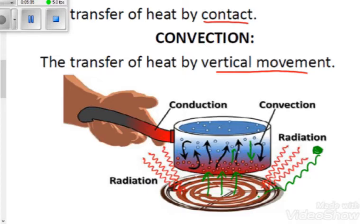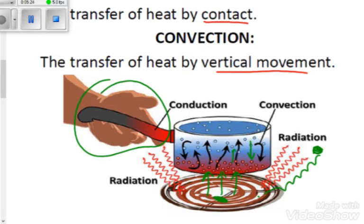The green and black arrows represent the movement of heat vertically from the hot surface — this is the convection process. Conduction is by contact — you can see the hand touching the pot, and the pot is hot. The heat is transferred from the hot part of the pot to the person's hand through conduction.